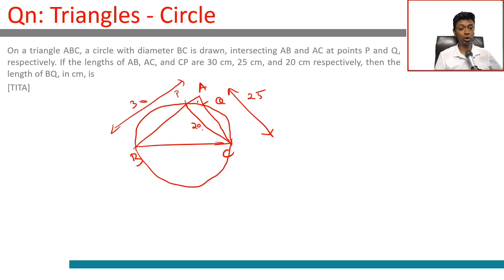And then the length BQ in centimeters is what we need to find. Key thing here, this is a semicircle, so this should be 90 degrees. This should be 90 degrees. So now we're looking to do Pythagoras theorem.